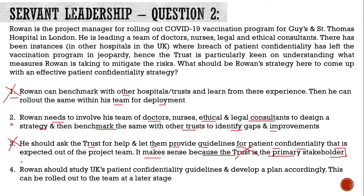Option four says Rowan should study UK patient confidentiality guidelines and develop a plan accordingly, to be rolled out to the team at a later stage. Again, it's on similar lines — Rowan is deciding for himself by studying guidelines, but in the end he is not including his team in decision making. This is behavior you do not expect from a servant leader. So the correct answer to this question is option number two, which talks about including the team for decision making and then coming up with a strategy.